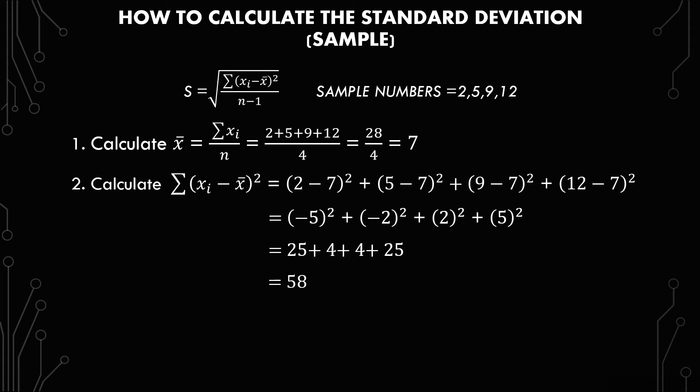Now that we have all this information, it's just a matter of plugging it back into the formula. So we have the square root of 58 over n minus 1, which is the square root of 58 over 4 minus 1, which is the square root of 58 over 3, and it yields 4.397.